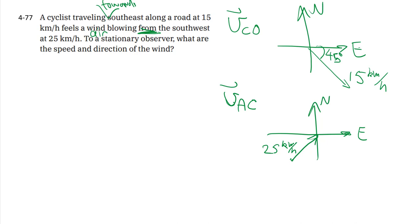Then at the end, they ask, to a stationary observer, what is the speed and direction of the wind? So that's referring to the velocity of the wind, or the air, relative to the stationary observer. So oftentimes with these relative motion questions, relative velocity questions, you end up with three different velocities, and they look very similar. So how do we keep track of where to put what?